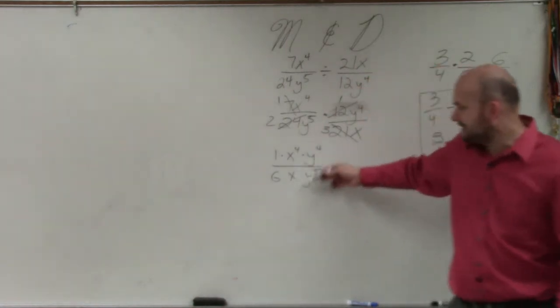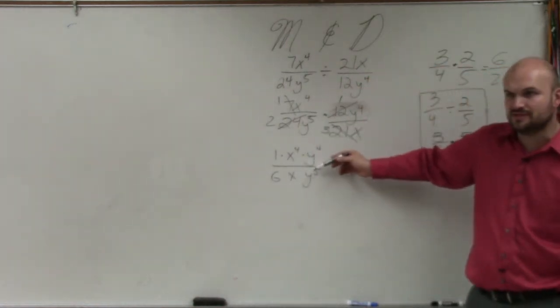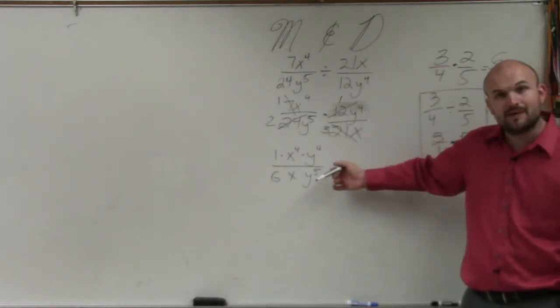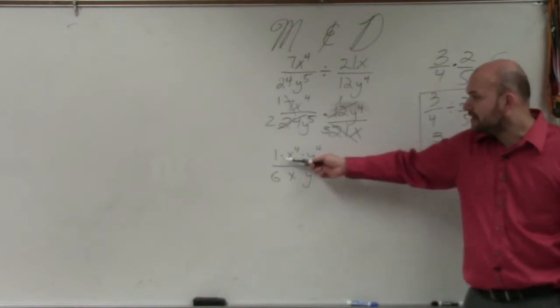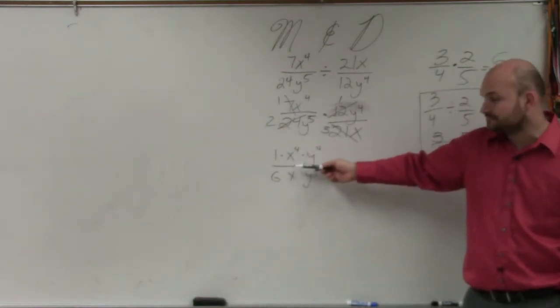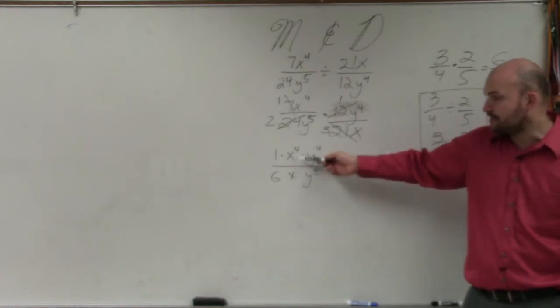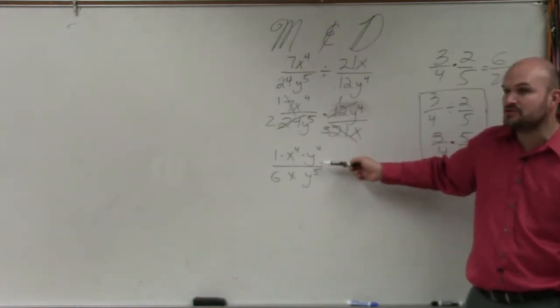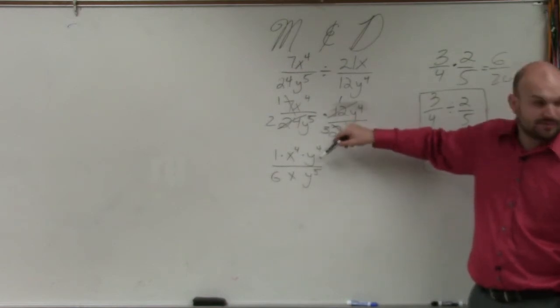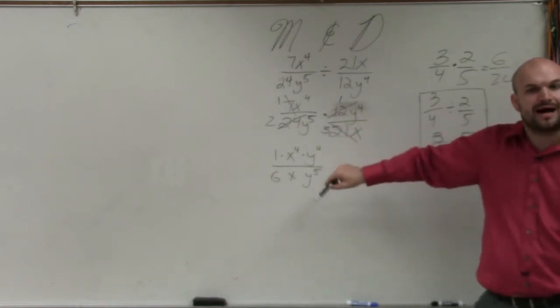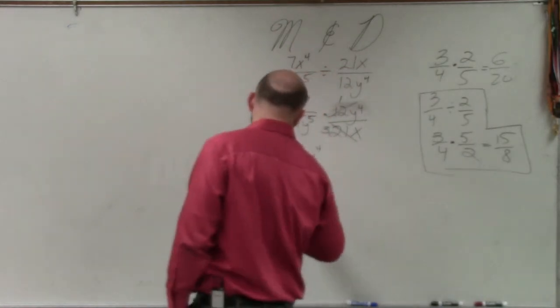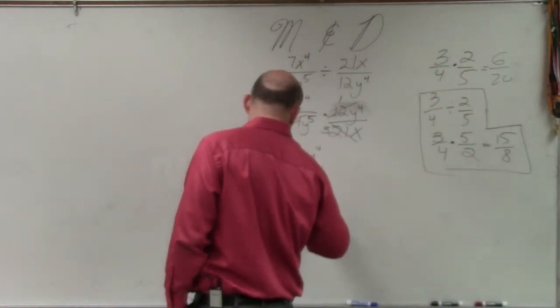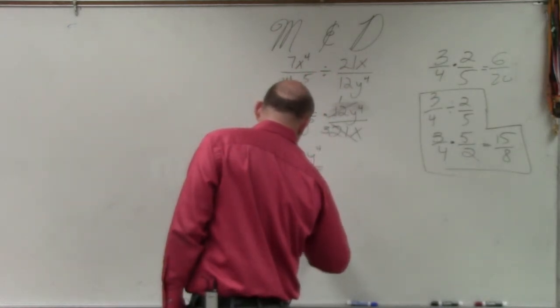But now, is it fairly easy for me to see what my final solution is? So, if I apply my rules of exponents, I'm going to have x to the 4th minus 1, which will be x to the 3rd on the numerator. And here, I'll have y to the 4th minus 5, which will be negative 1. So, since it will be negative 1 in the numerator, the y is going to have to go in the denominator. So, my final answer, it will be x to the 3rd divided by 6y.